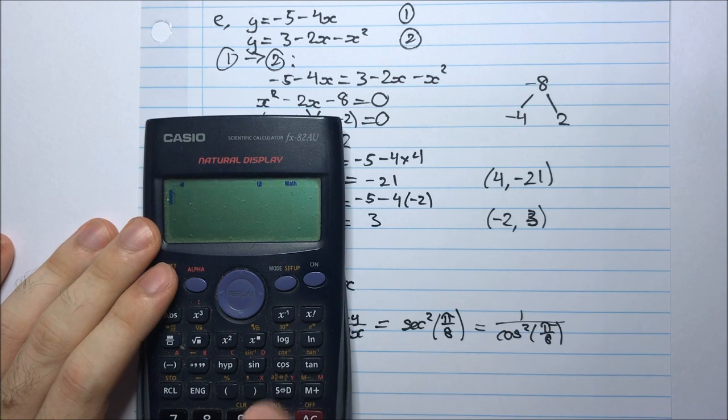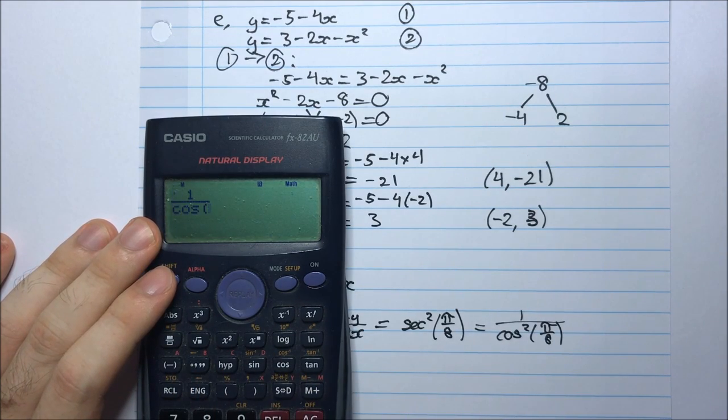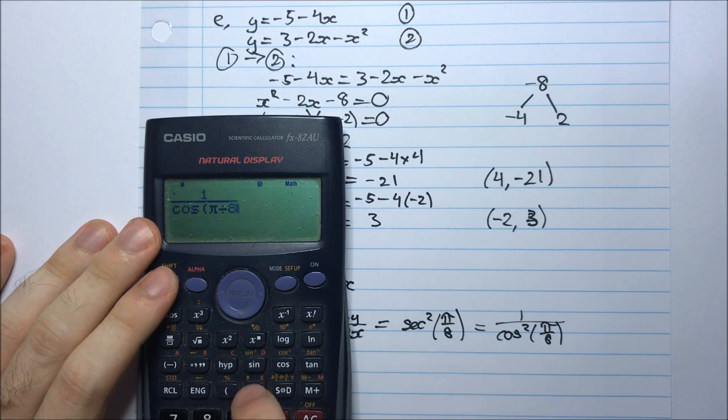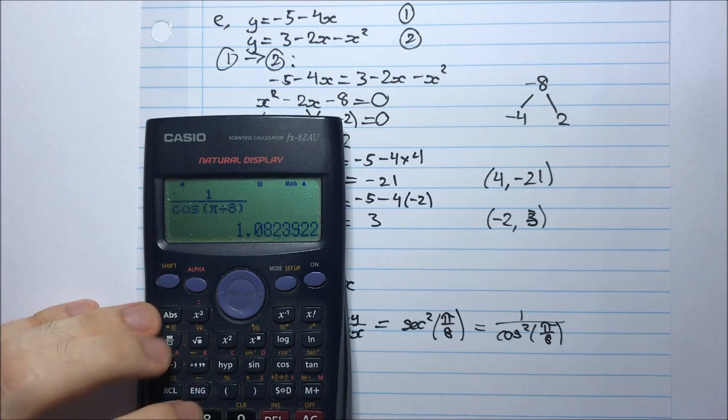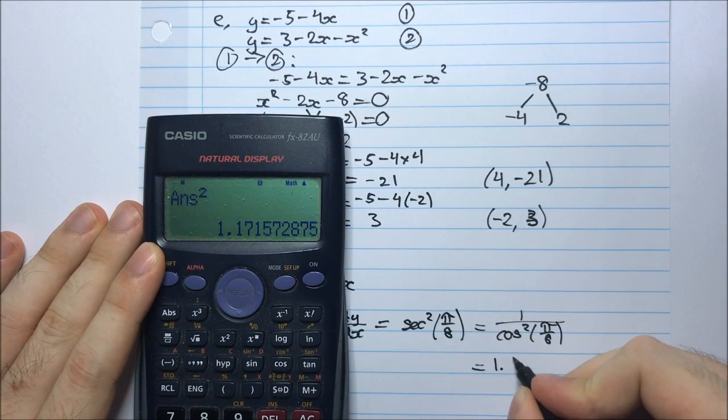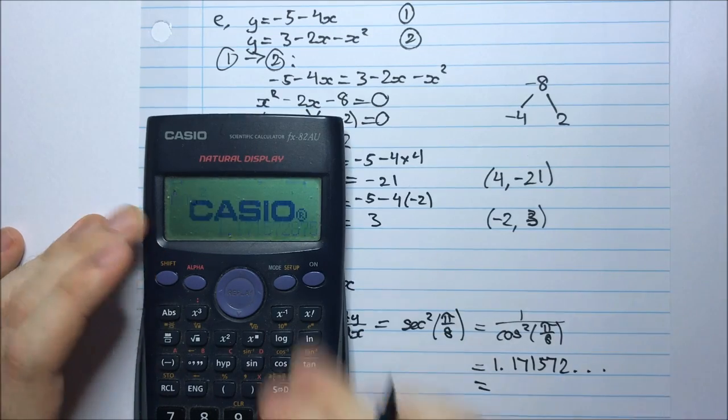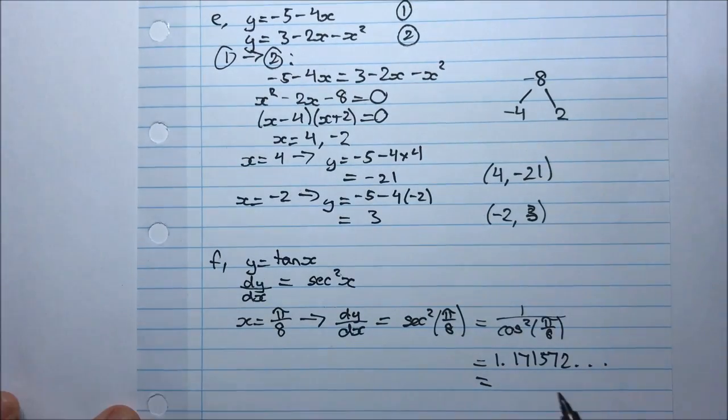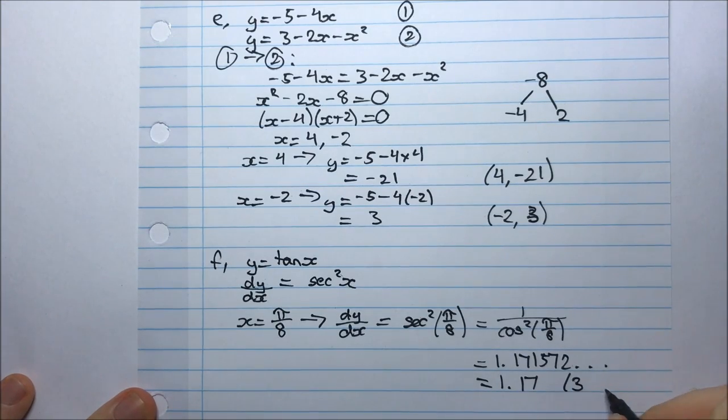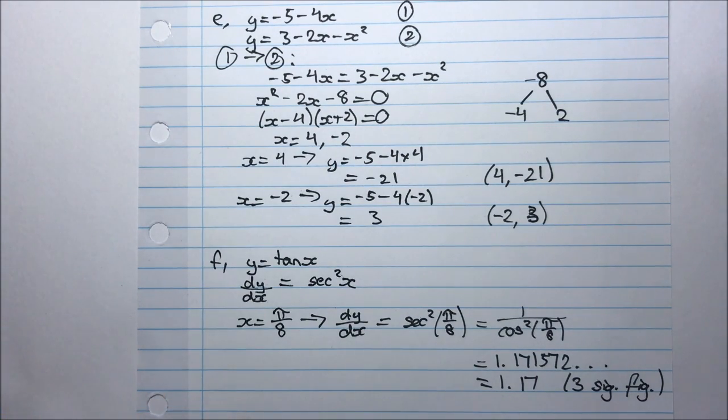So 1 divided by, or first let me write in brackets, in a fraction form, cos(π/8). And then I can square that entire thing. And so I get 1.171572... I want three significant figures. So 1.17. And that's to three significant figures. And that's part f done.